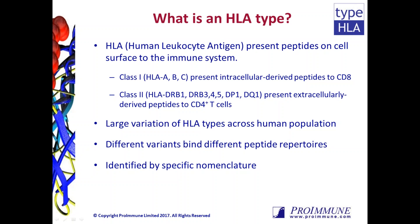Class 1 HLA presents peptides to CD8 T cells and class 2 HLA presents peptides to CD4 T cells. There are a large number of HLA variants across the human population, and small changes in the molecules result in functional differences between different HLA types, including the repertoire of peptides each is able to bind. Therefore there is a set nomenclature used to identify HLA types.